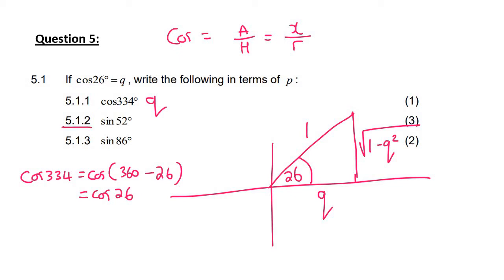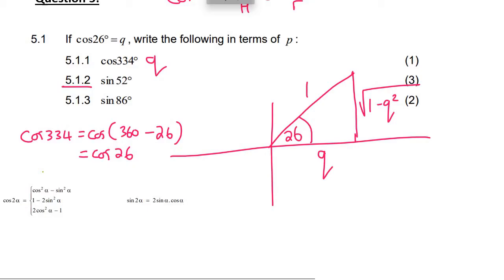Then for the sin of 52, what you should see immediately is that 52 is double 26. So because of this, we use the double angle formulas. And specifically, we are going to need to use this one over here.